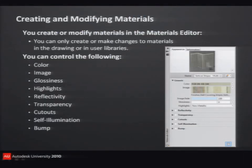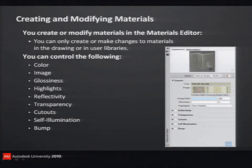We can also modify these materials the same way we were able to modify lights. I've got this material palette and I can go out and modify the properties of any of the materials: I can change the color, the image, the glossiness, the highlight, the reflectivity, the transparency. I can create cutouts. I can make this look like it's self-illuminated so I can create neon lighting just by creating a material that has luminosity to it. And I can also apply things like bump maps and texture maps.